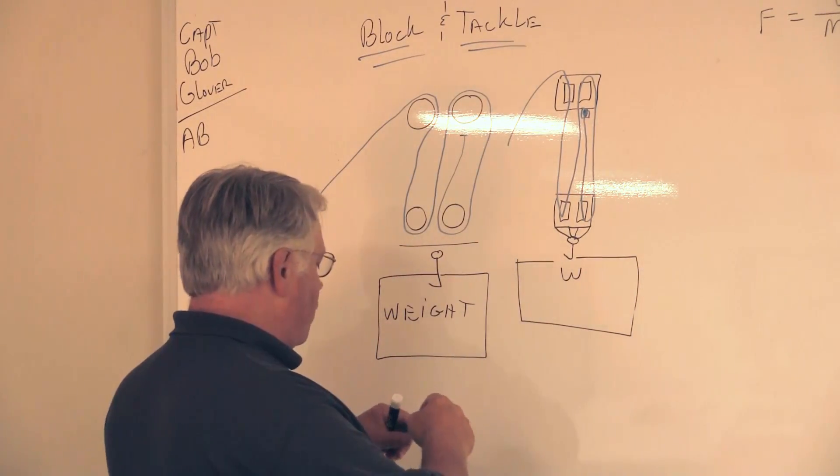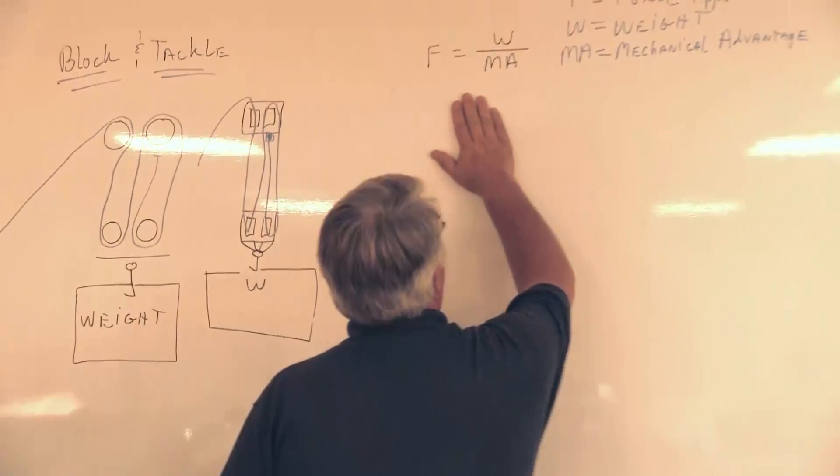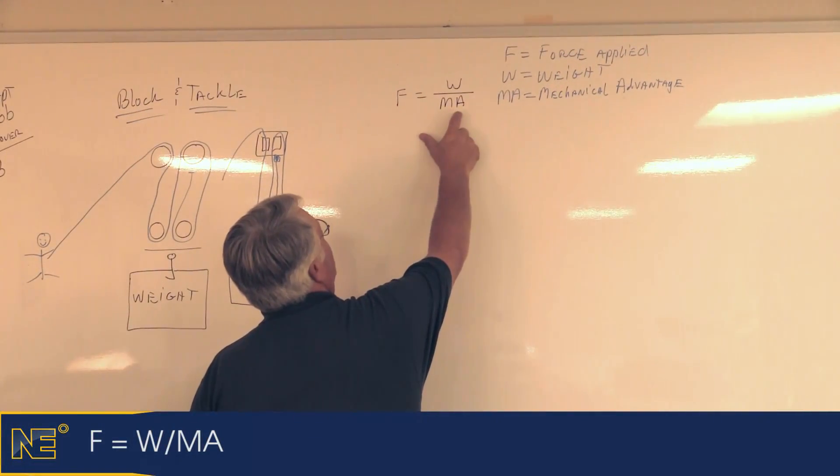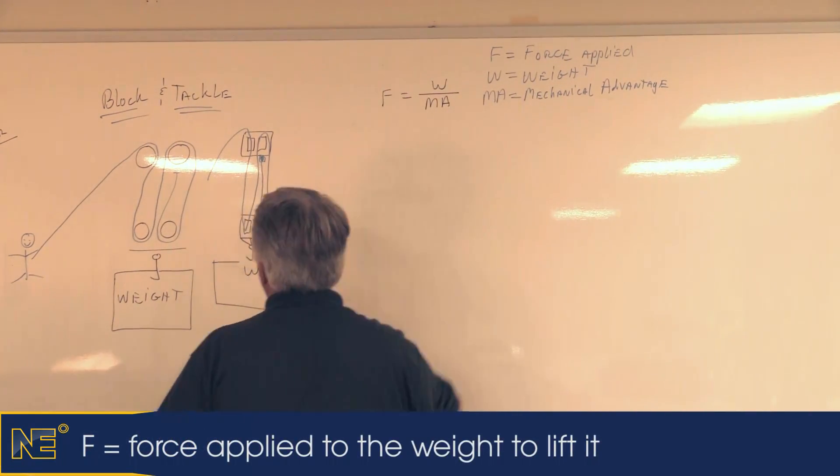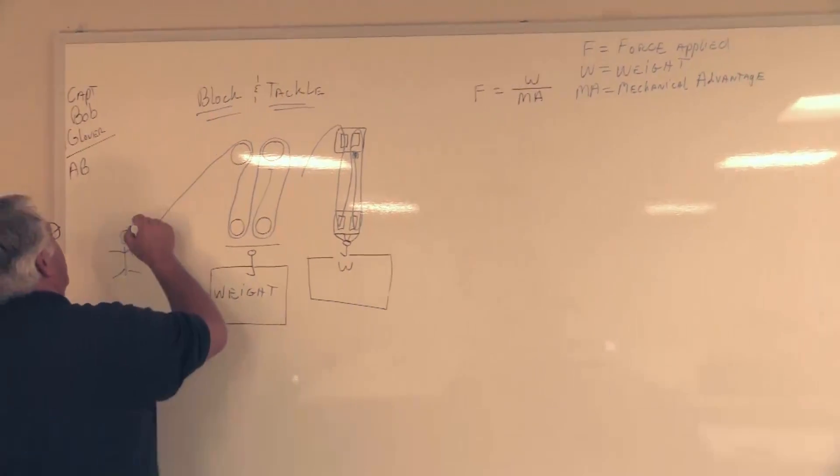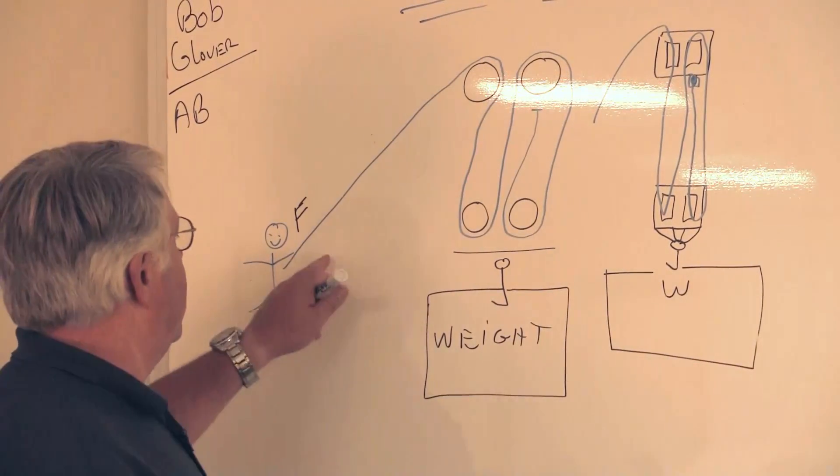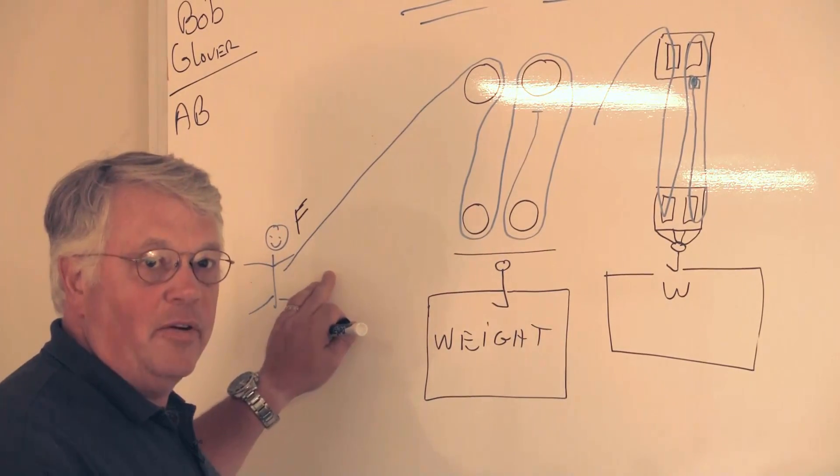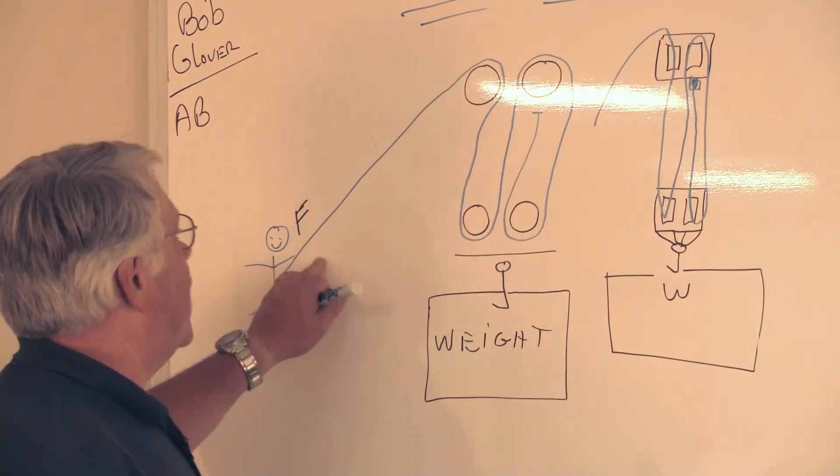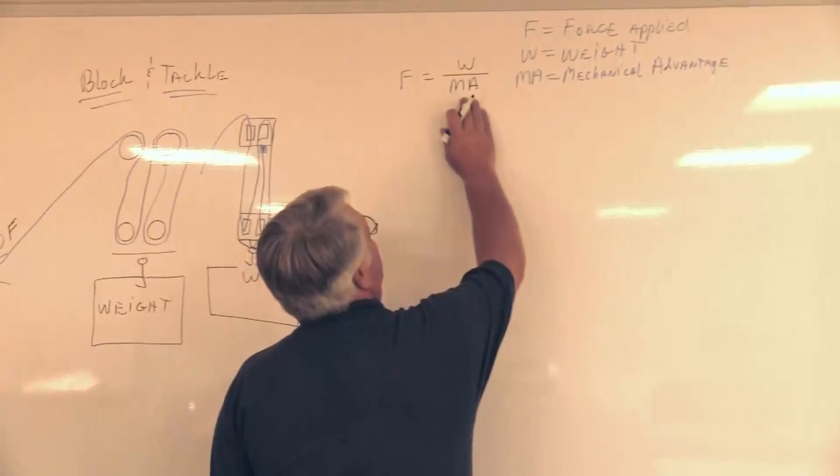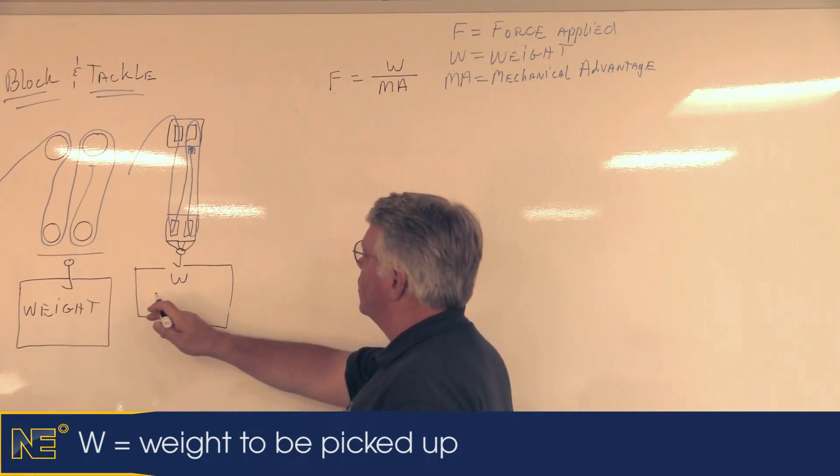We have to have a formula. Here's our formula: F equals W divided by MA. What does that represent? F is force - the force that we apply with our hands. This could be just human power, or it could also be a winch on deck, whether it's a capstan, anchor winch, or tow winch. W is the weight that we're going to pick up.